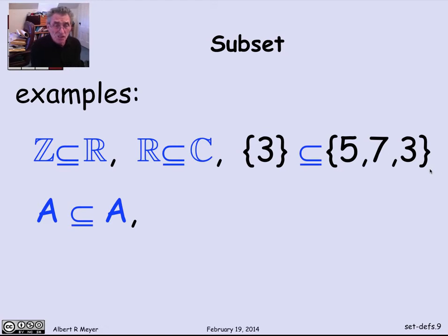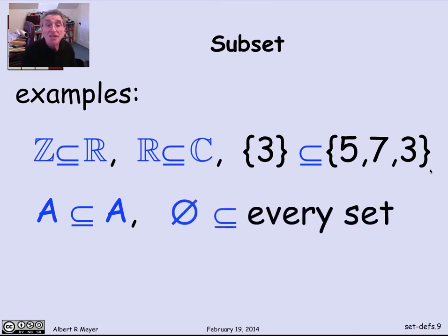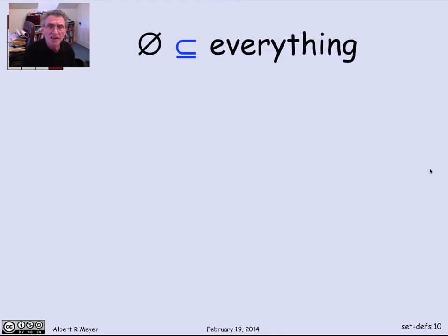A consequence of this general definition is that every set is a subset of itself. Because everything in A is in A, that's not really very interesting. Another important general observation is that the empty set is a subset of everything. The empty set is a subset of every set. Let's look at why that is in more detail.